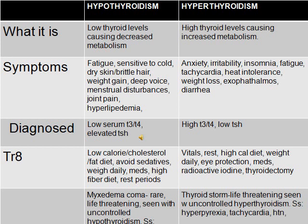Treatment for hypothyroidism — too little thyroid hormone: low calorie, low cholesterol, low fat diet. Avoid sedatives, weigh the patient daily, take levothyroxine (Synthroid), which is usually taken lifelong, maintain a high fiber diet, and give rest periods.